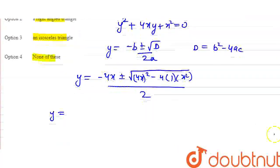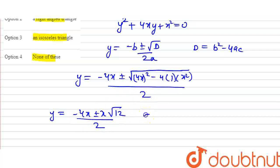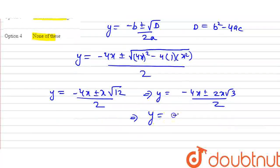So y equals minus 4x plus or minus root of (b squared minus 4ac). That gives us: 16x squared minus 4 times 1 times x squared equals 16x squared minus 4x squared equals 12x squared. So root of 12x squared equals 2x root 3. Therefore y equals minus 4x plus or minus 2x root 3, divided by 2.